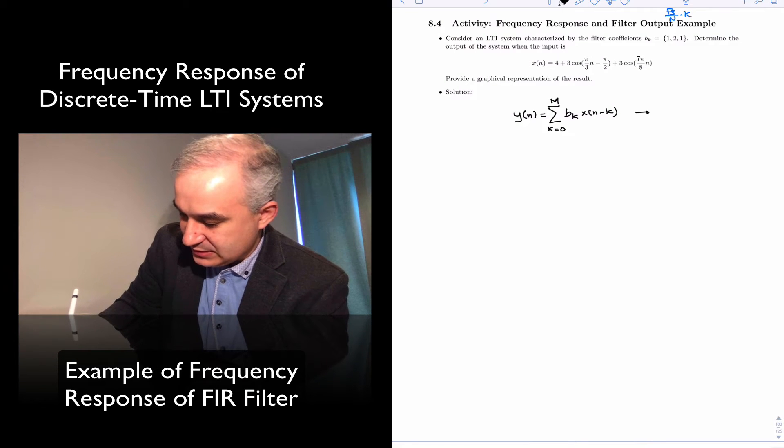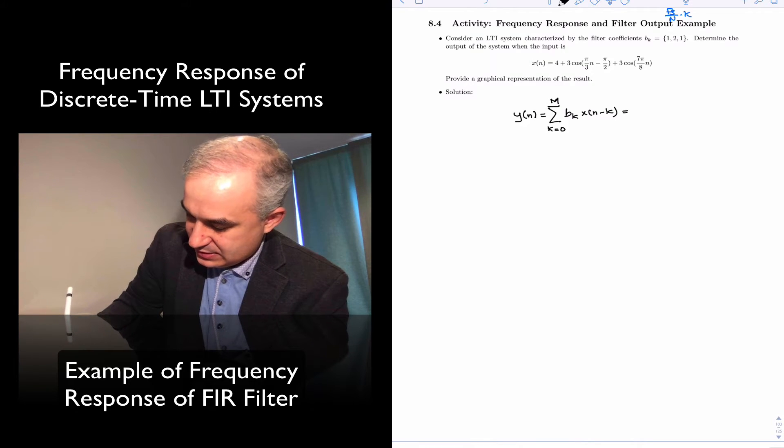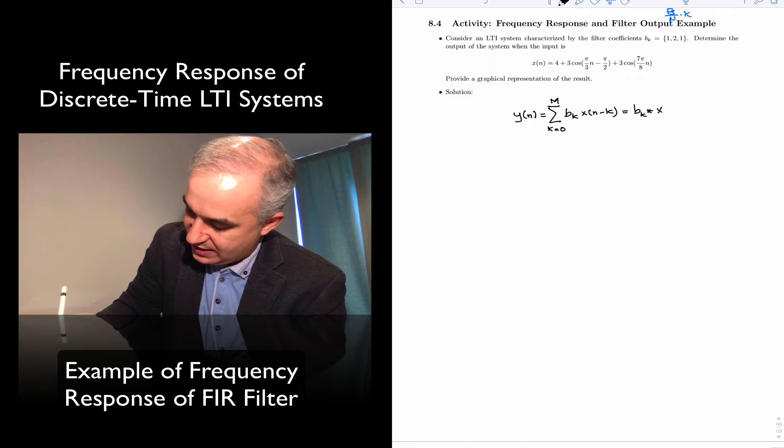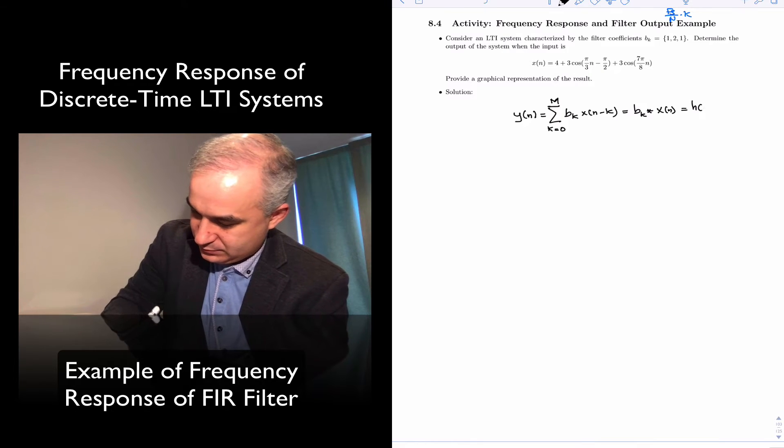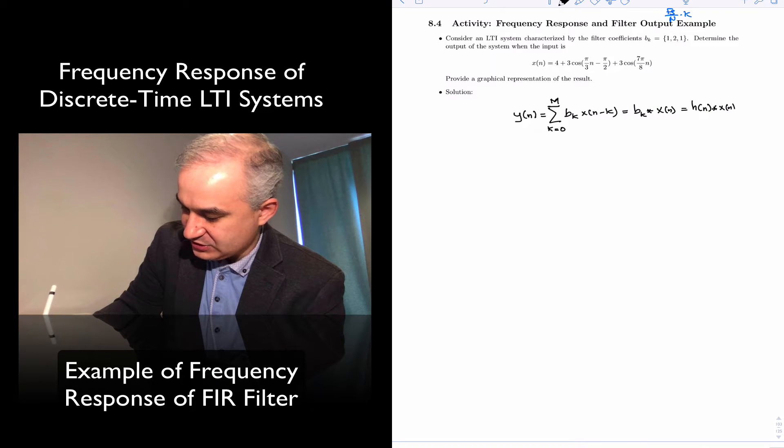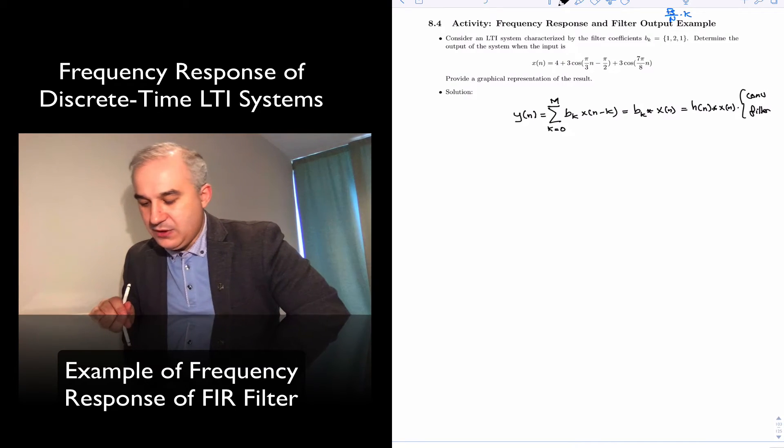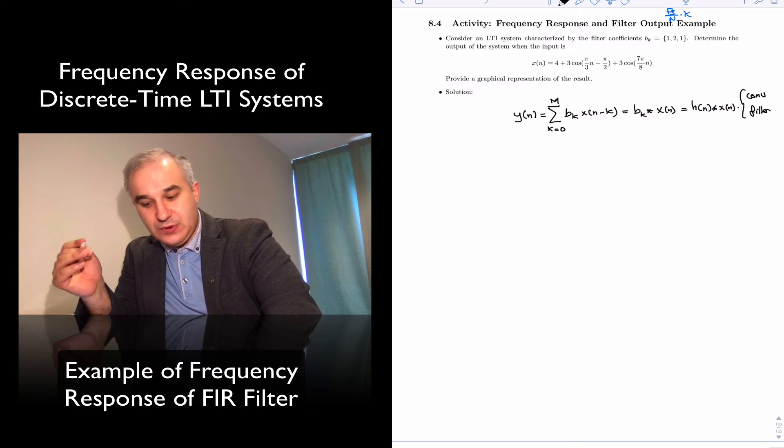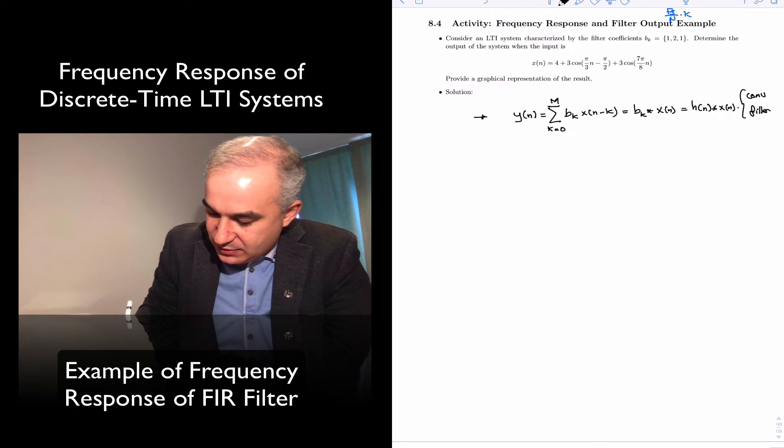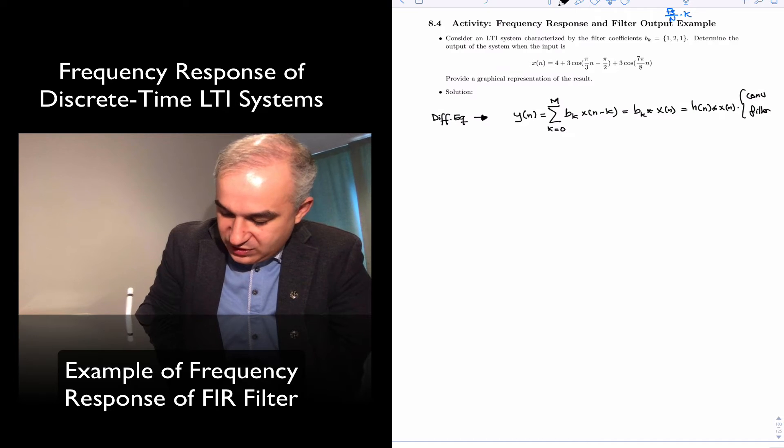This, notice, is convolution. This sometimes is represented as Bk convolved with x of n. In MATLAB, you can use the function convolution or the function filter to find the output. For any input, it doesn't matter what shape, it does not have to be sinusoidal. So this is the time domain characterization of the system with the difference equation. With the difference equation, you can find you have a relationship of the output for any other input.